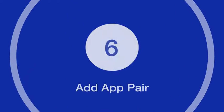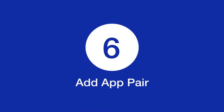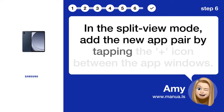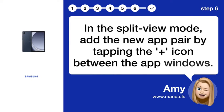Step 6: Add app pair. In the split view mode, add the new app pair by tapping the plus icon between the app windows.